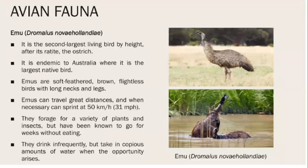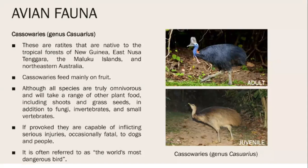The emu is the second largest bird in the world (after the ostrich) and is endemic to the Australian region. Its body has very soft, brown feathers. This bird is flightless — it can walk and run but cannot fly. It is also present in northeastern Australia.